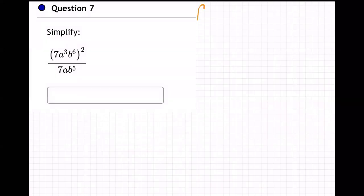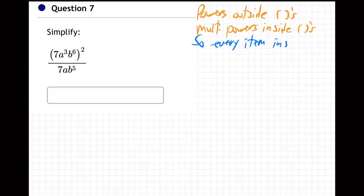Okay, so again, powers outside parentheses multiply powers inside parentheses. So every item inside parentheses not showing its power really has a one power.